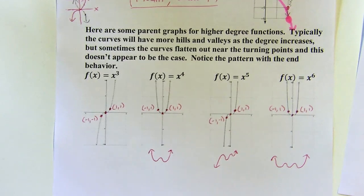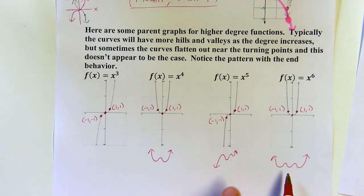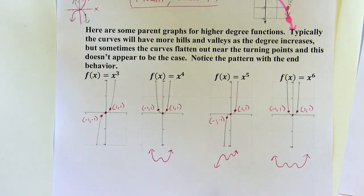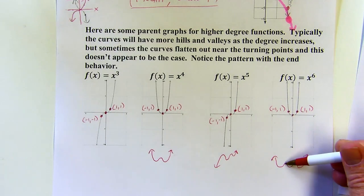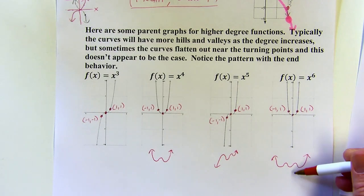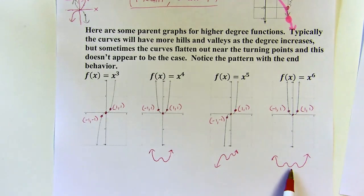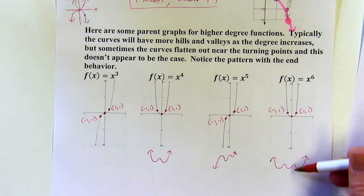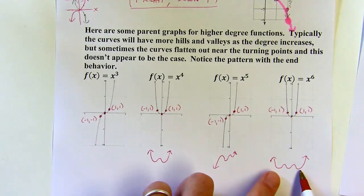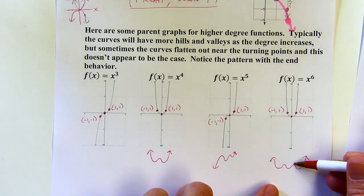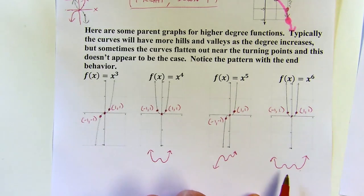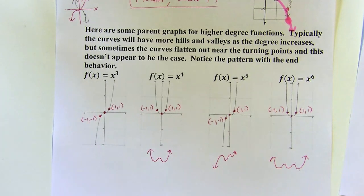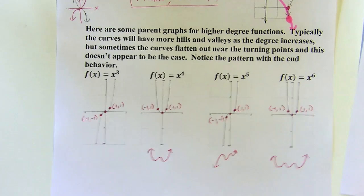They might look something like this, and in order to find all those hills and valleys when graphing, we need to be able to find what are called minimas and maxima — they're like the local vertex, the vertex in their little area. But that's for another day.